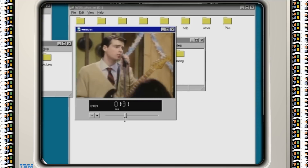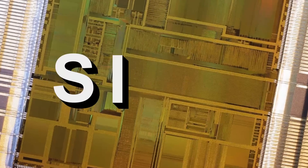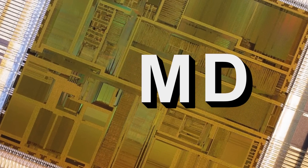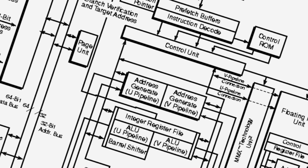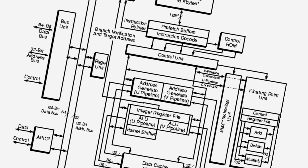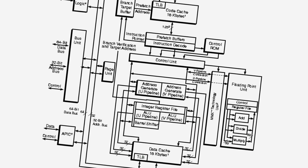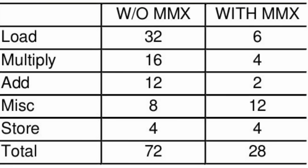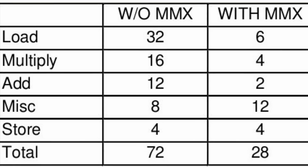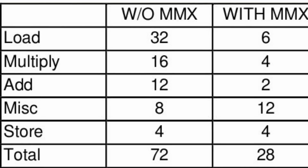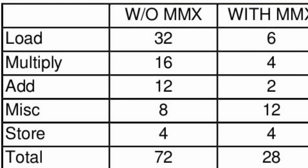These 57 instructions use a technique known as SIMD — Single Instruction Multiple Data — which means that a single instruction operates on multiple pieces of data in parallel. For example, with a single MMX instruction, up to 8 integer pairs can be added together in parallel.